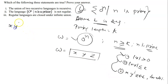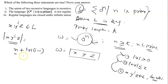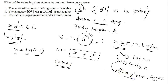Assuming this partition exists and the conditions hold, the third condition says x y^i z belongs to L for all i. The length of x y^i z is n plus (i minus 1) times the length of y. Since the length of xyz is n, the length of x y^i z equals n plus (i−1) × |y|.